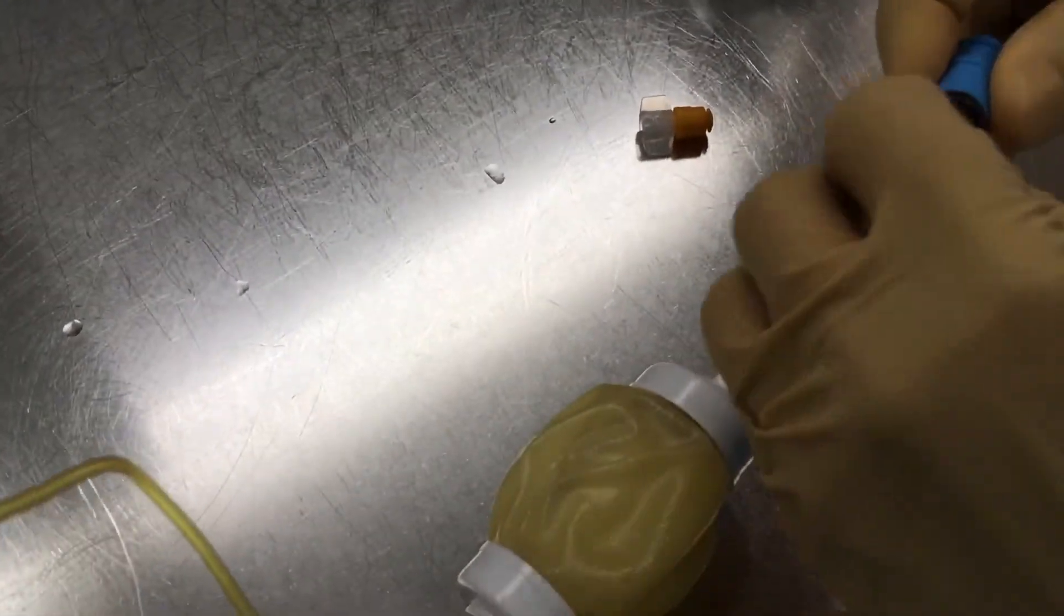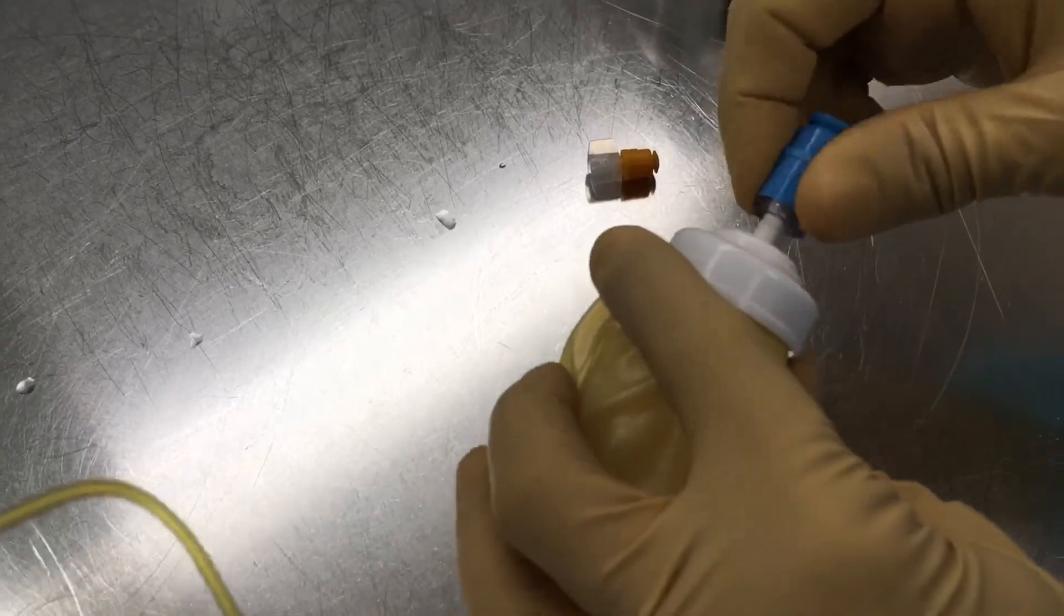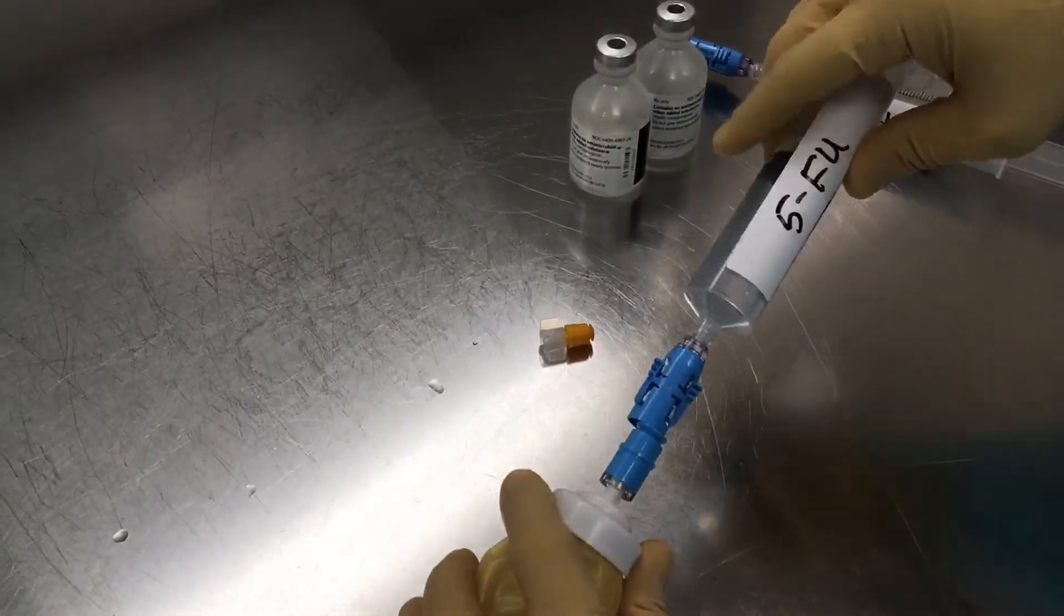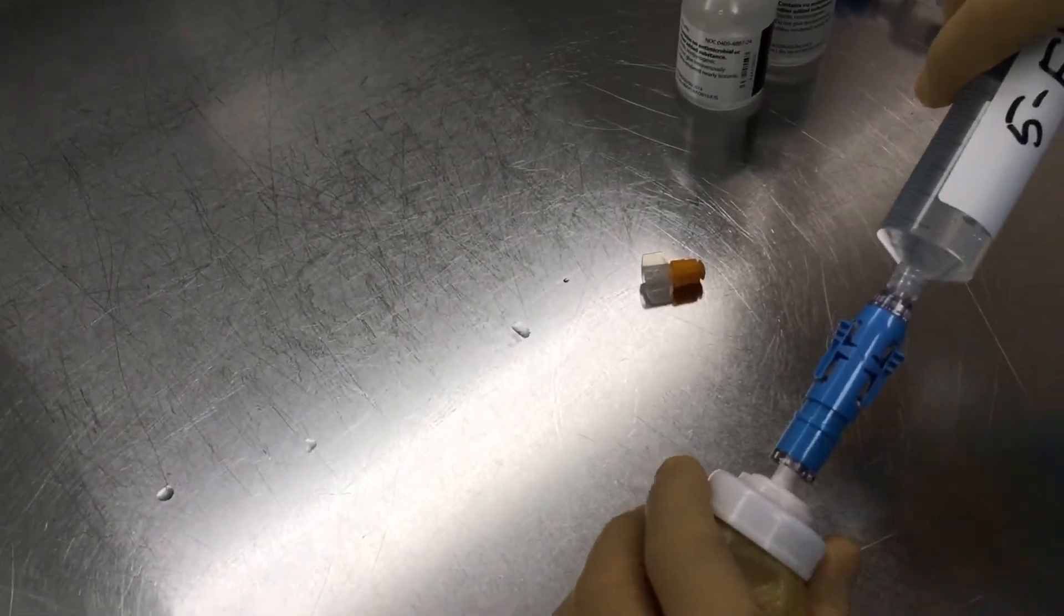You're going to screw it onto the pump. That's where the syringe is going to get locked. Don't overtighten this piece because you're going to have to unscrew it.